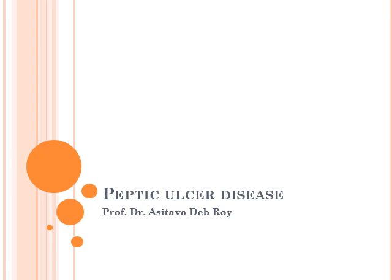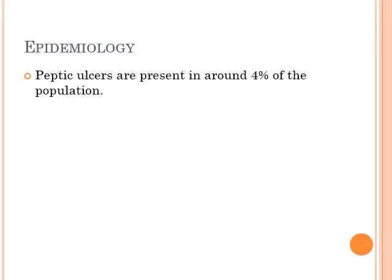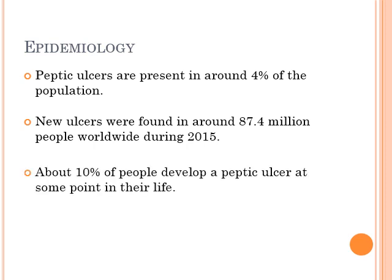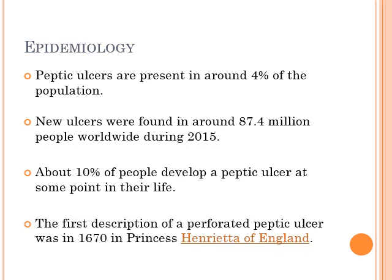Hello students, after you have gone through your chapter on gastritis, today we are here to discuss peptic ulcer disease. Starting with the epidemiology, peptic ulcers are present in around four percent of the population. These data are from 2015 — around 87.4 million people worldwide get new ulcers, and about ten percent of people develop a peptic ulcer at some point in their life.